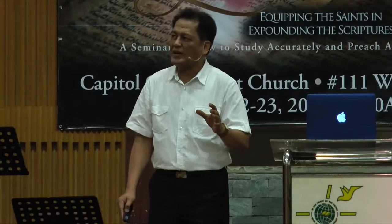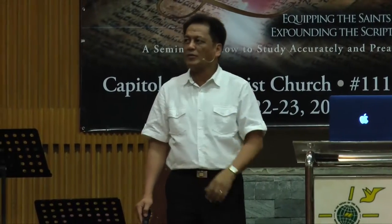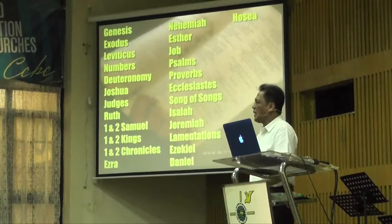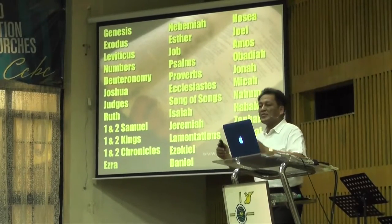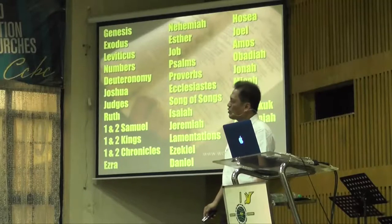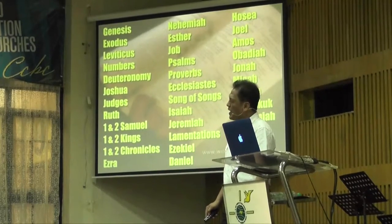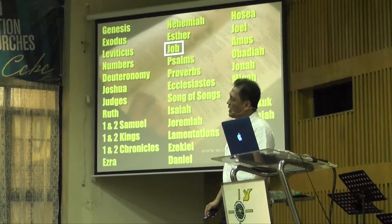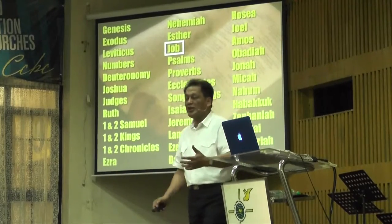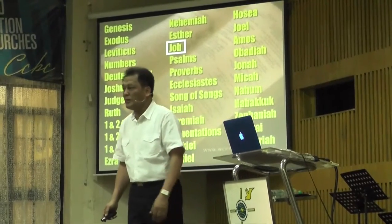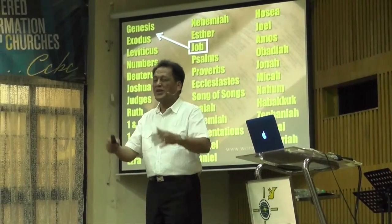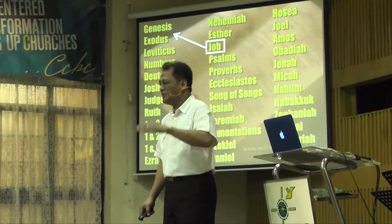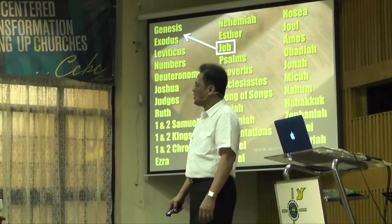Now, we all realize that the Bible is not arranged chronologically, isn't it? This is how our Bibles are arranged — the 66 books — and this can be confusing because it's not arranged historically or chronologically. For example, if you have the book of Job right there, in terms of chronology he's actually a contemporary of Abraham. Therefore, the book of Job should be somewhere after Genesis, or at least about the same time there with Abraham.